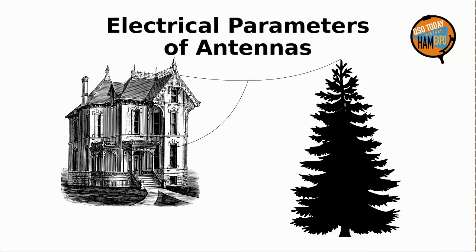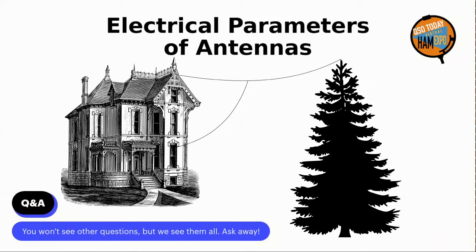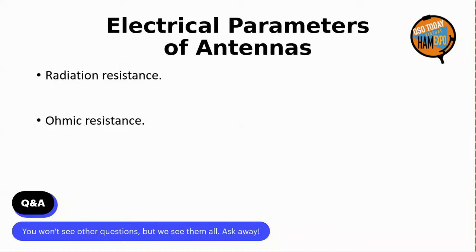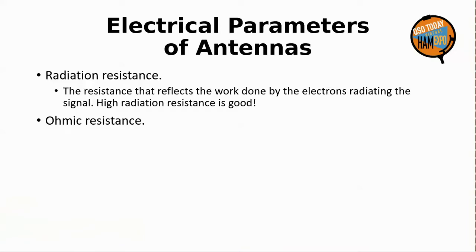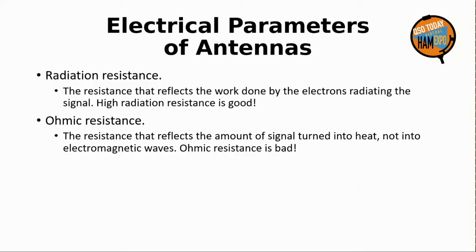For a simple piece of wire or rod, an antenna sure has a lot going on electrically speaking. There are four key parameters that affect antenna performance. First, there are two distinct types of resistance, neither of which you can measure with your ohmmeter. There's radiation resistance and there's ohmic resistance. Radiation resistance is the resistance that reflects the work done in radiating the signal — we want radiation resistance to be very high relative to ohmic resistance. Ohmic resistance represents the amount of applied signal that just gets turned into heat. The ratio of radiation resistance to ohmic resistance determines the antenna's efficiency.